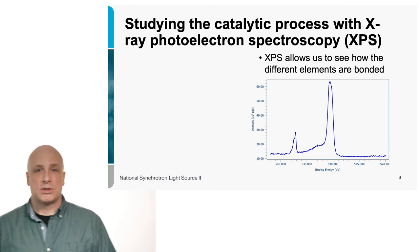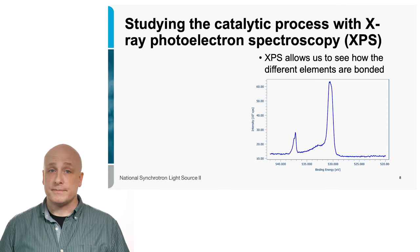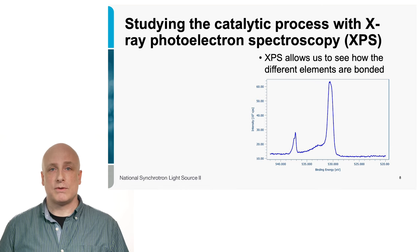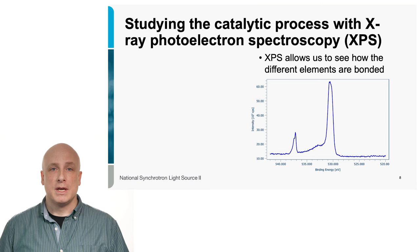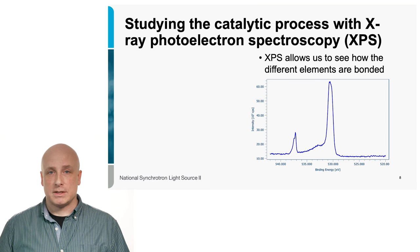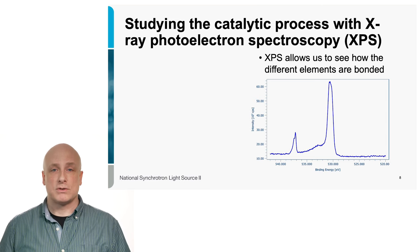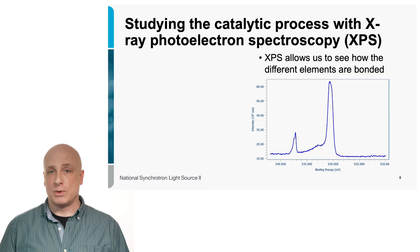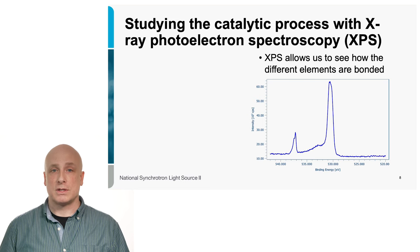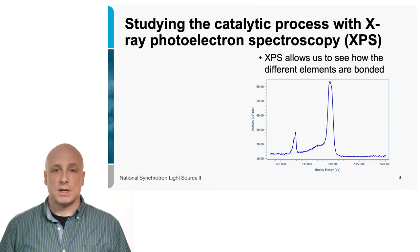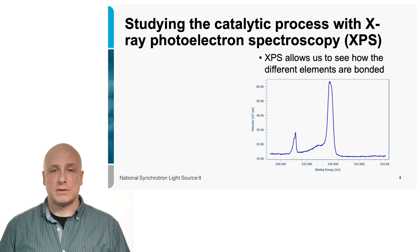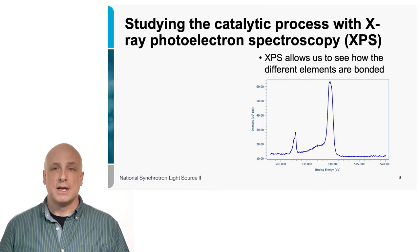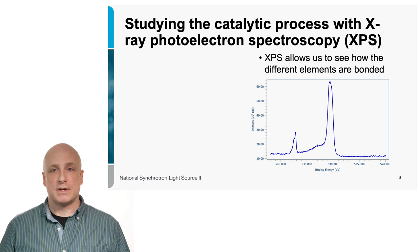So, how do we actually figure out if we're getting what we want? So, at IOS, we use X-ray photoelectron spectroscopy, which basically means that we shine X-rays from the synchrotron onto the sample, and depending on what state the sample is in, we will get a different response out of it. So, this is, I promise, the only spectrum that I'll show you in the entire presentation, but it allows us to see how the different elements are bonded.